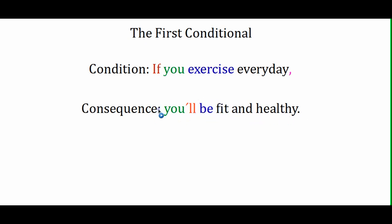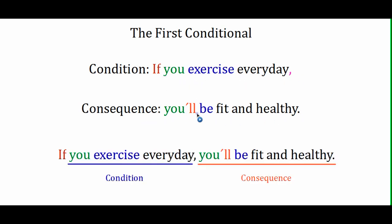In the consequence we have our subject 'you,' then our modal 'will,' and then the verb 'be.' This is the future possible consequence. So the structure is: condition in simple present tense, followed by the consequence in the possible future.